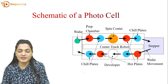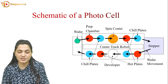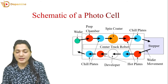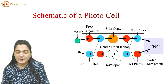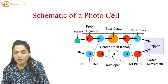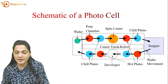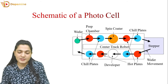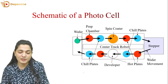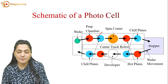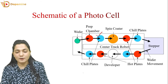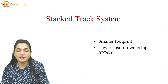The photo cell has various process steps: the wafer is first moved to the preparation chamber, which is a hot plate, and then cooled with a chill plate. Then we have the photoresist spin coater, followed by another hot plate and chill plate to bring the wafer back to ambient temperature. Then the wafer goes to the stepper, then back to the hot plate for post-exposure bake, then to the chill plate, then to the developer for development, then to the hot plate again, and finally to the chill plate. After every hot plate, there is a chill plate, and the center track robot moves the wafer throughout.